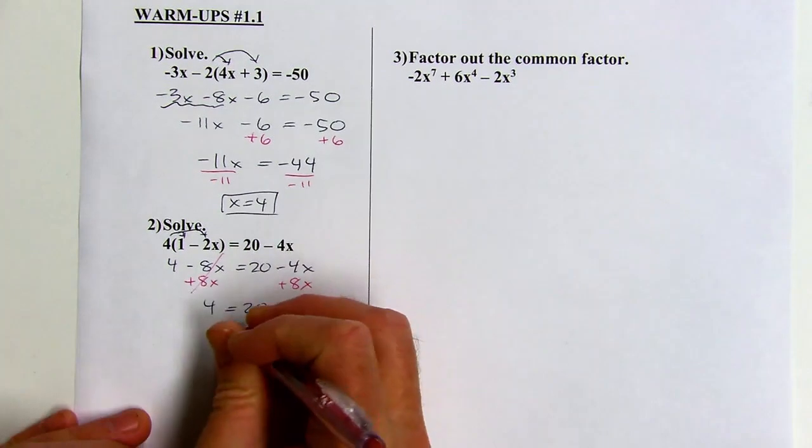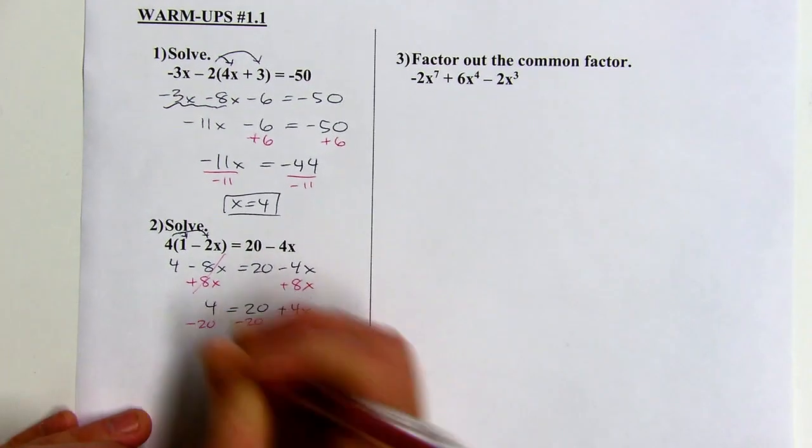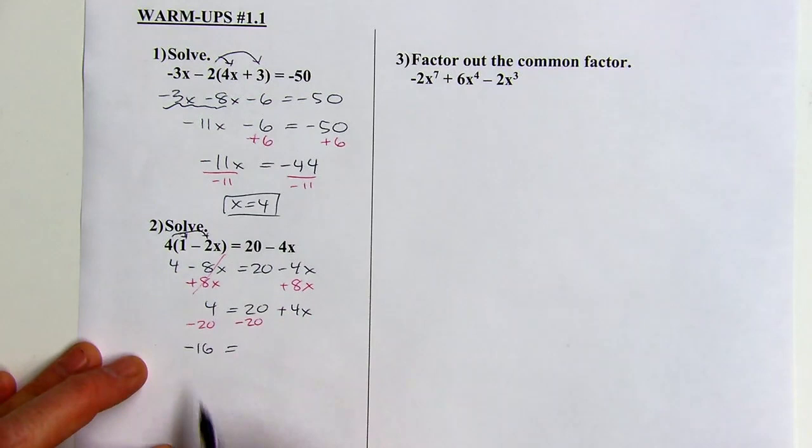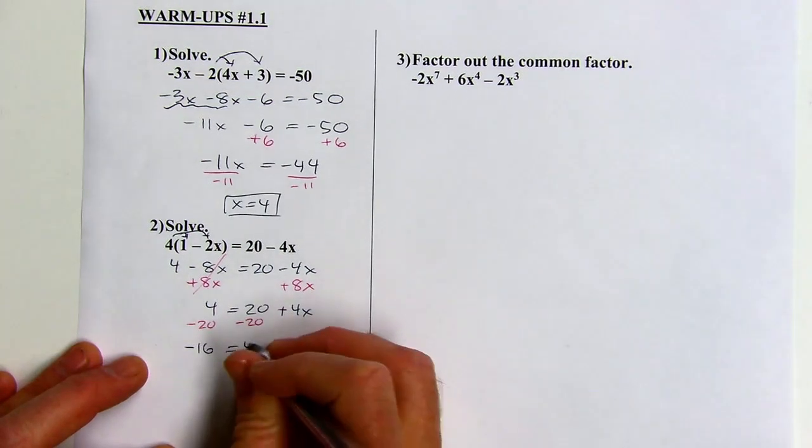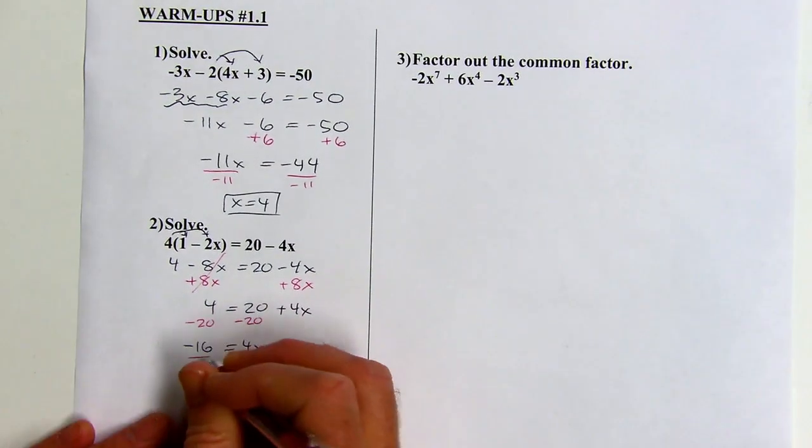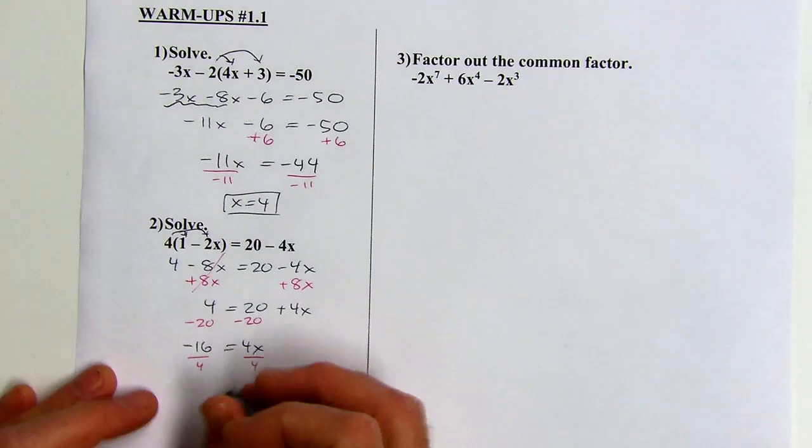And I'll subtract 20. So, 4 minus 20 is negative 16, that equals 4x. And last thing, divide by 4. And x is going to equal negative 4 then.